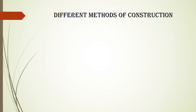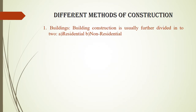Building construction is further divided into two categories: residential building construction and non-residential building construction. Residential building construction is the construction of residential buildings such as houses, apartments, flats, etc. Non-residential building construction is the construction of other types of buildings such as commercial buildings, shopping complexes, malls, hospitals, educational institutions, etc.